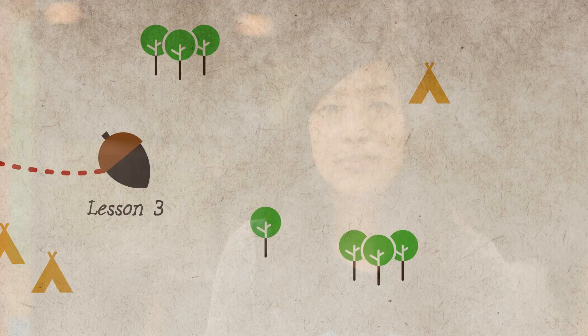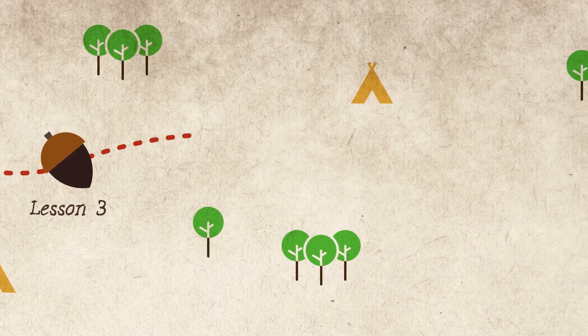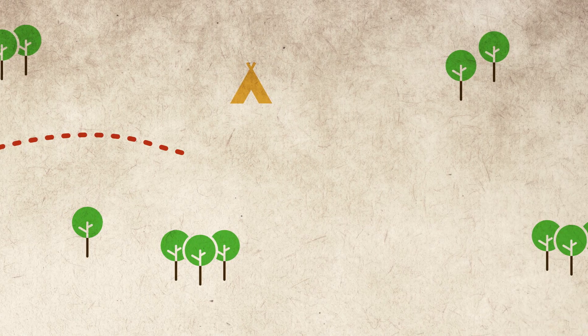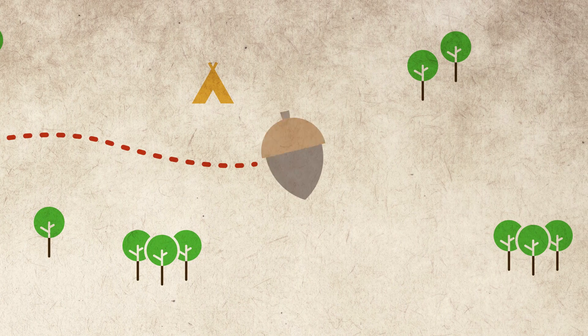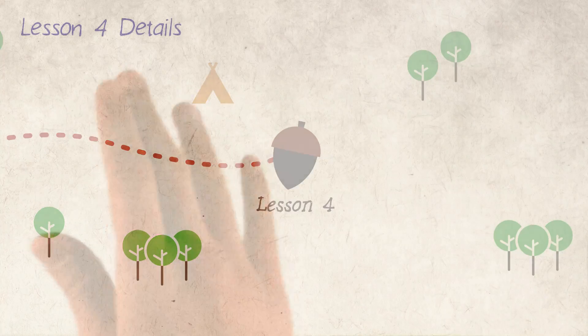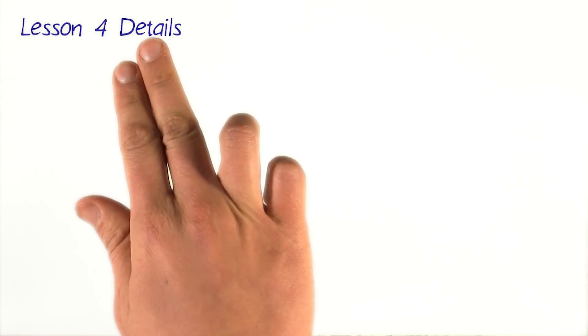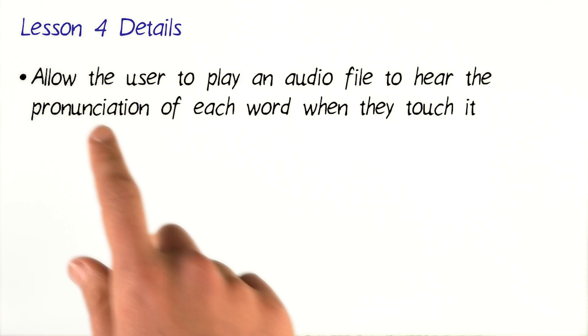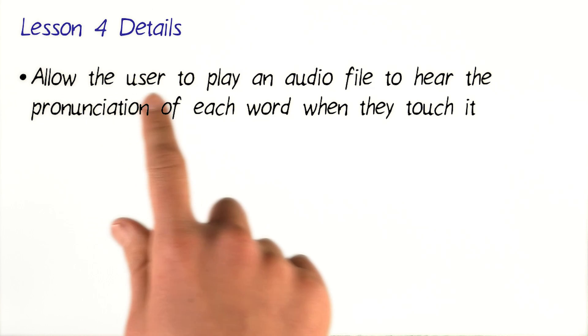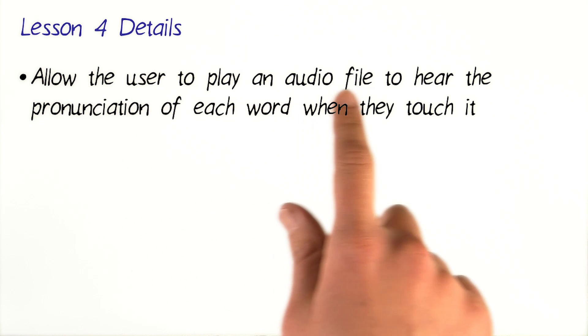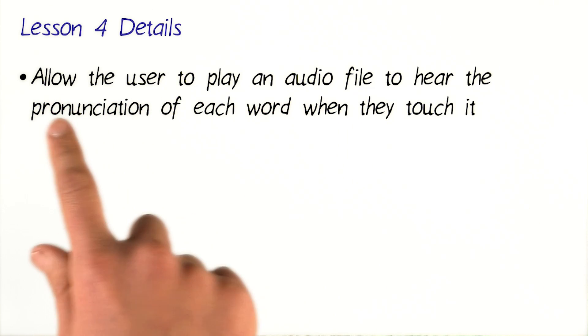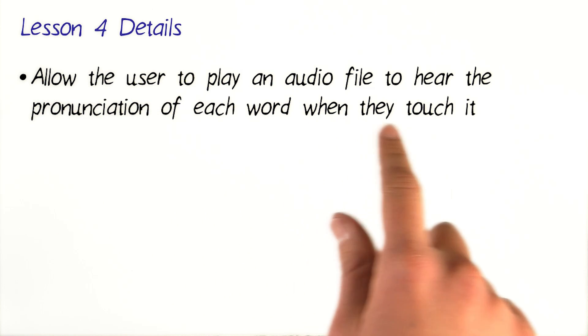So while they're doing that, let's get back to the course map. All right. So right now we're in lesson four out of our four lesson course — we're in the home stretch now. In this lesson, we're going to first allow the user to play an audio file to hear the pronunciation of each word when they touch it.